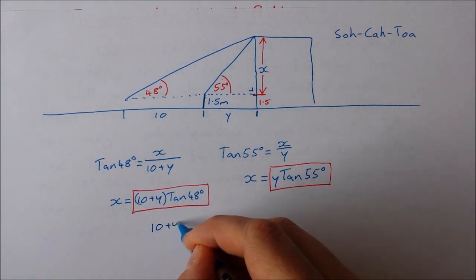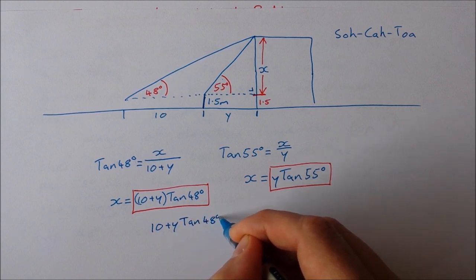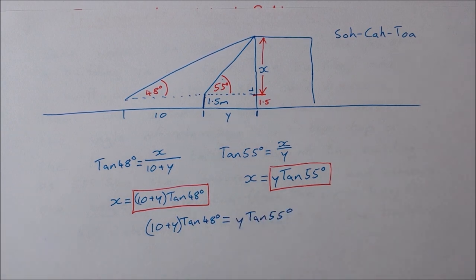So 10 plus y tan of 48 degrees is equal to y tan 55 degrees. Okay, what I want to do now is I want to try and isolate these y's to one side and then have something on the other side that has no unknowns. So let's work on that.